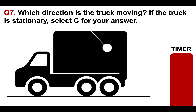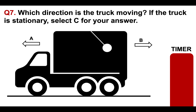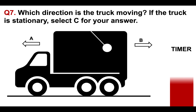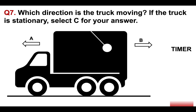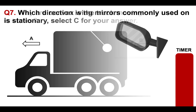Question seven: which direction is the truck moving? If the truck is stationary, select C for your answer. Is it A: that direction, B: that direction, or C: stationary? If you need more time as we go on, please pause the video — it's important that you get them correct.